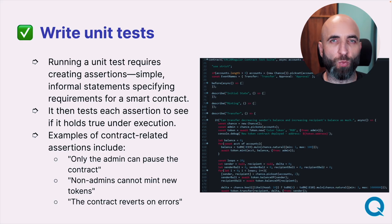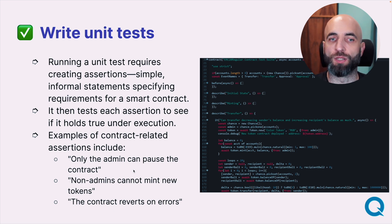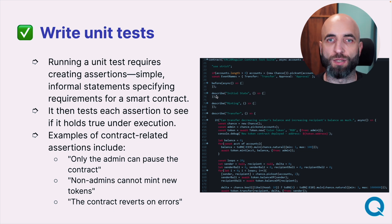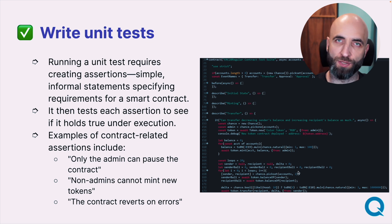Write unit tests — think about what your smart contract needs to do and write tests for those scenarios. For example: only the admin can pause the contract, non-admins cannot mint new tokens, the contract reverts on errors. You can have separate test groups for initial state, minting, and transferring, describing what needs to happen and then asserting the outcome in each unit test.